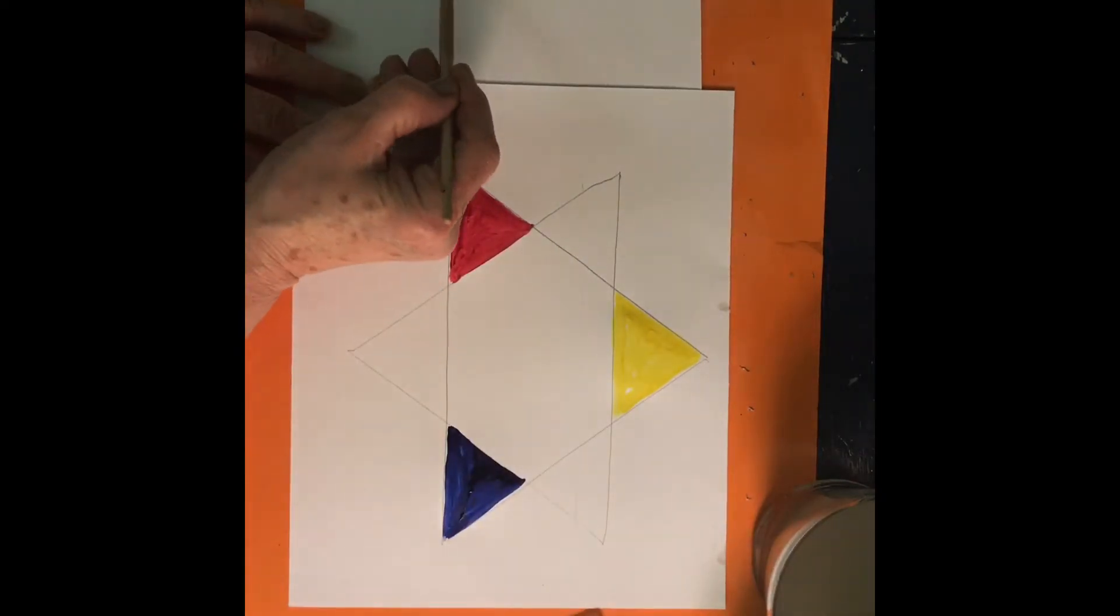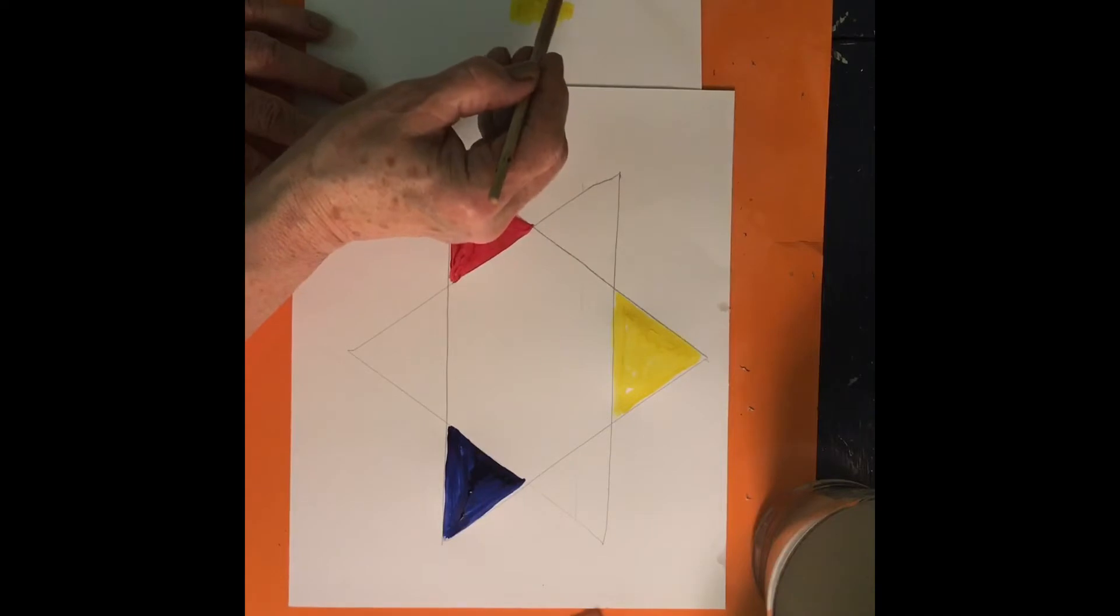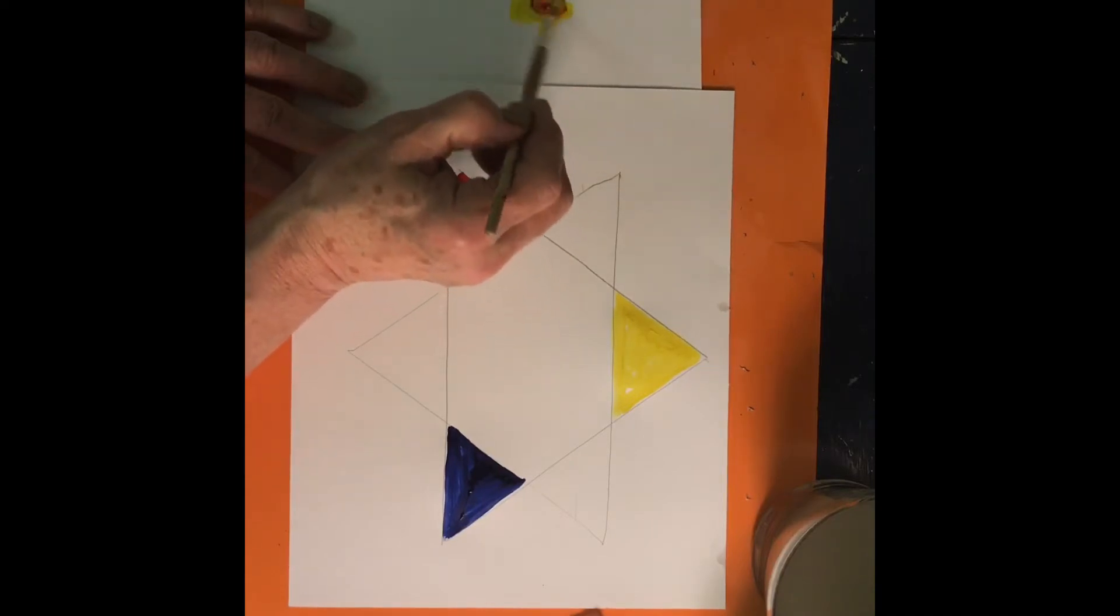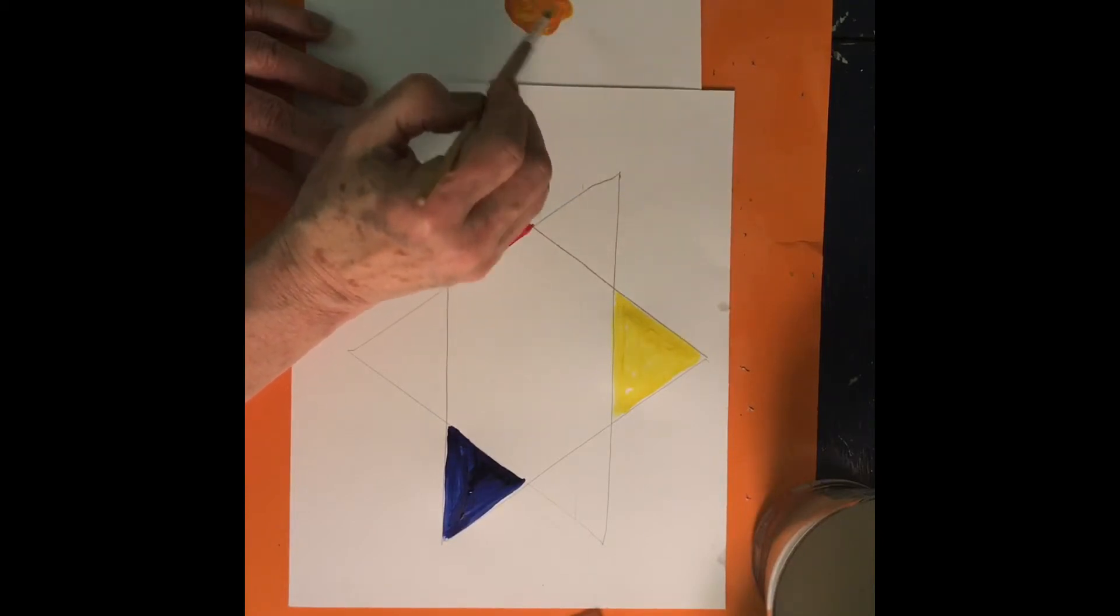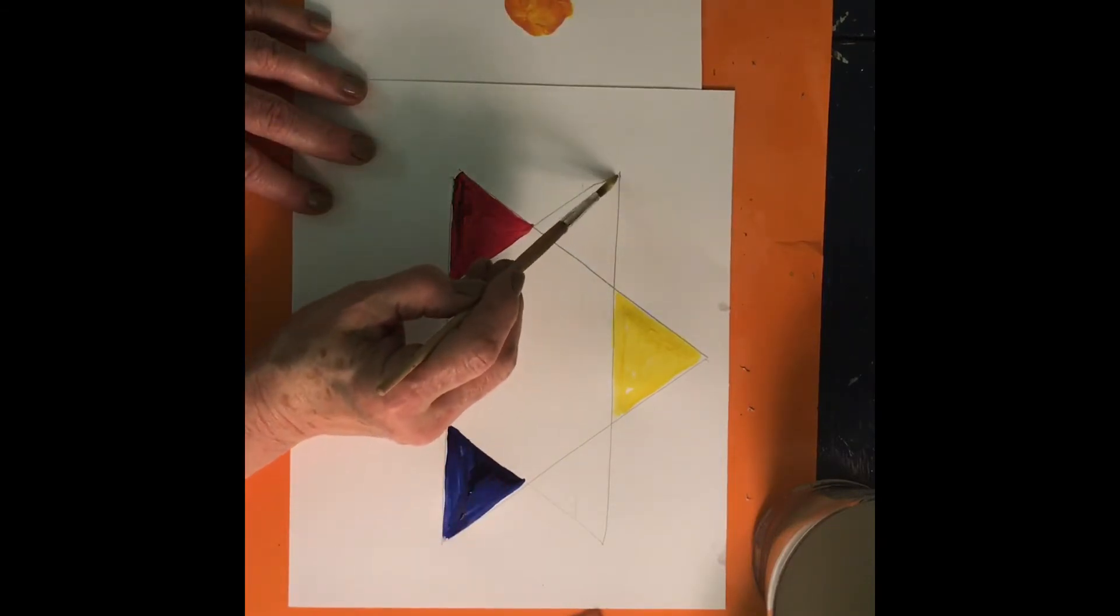So, I am going to take yellow and red, and it turns out to be orange. So, in between the red and the yellow, I'm going to be painting the orange.